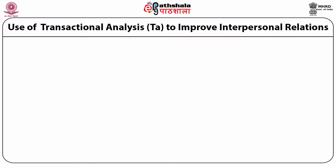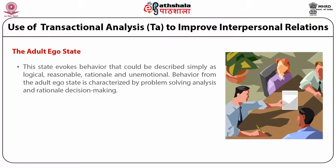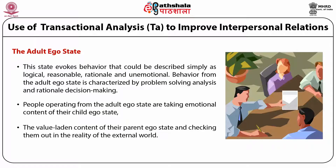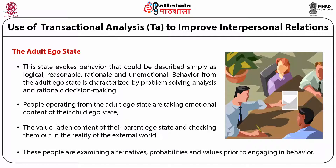The adult ego state evokes behavior that could be described as logical, reasonable, rational, and unemotional. Behavior from the adult ego state is characterized by problem-solving analysis and rational decision-making. People operating from the adult ego state are taking the emotional content of their child ego state and the value-laden content of their parent ego state and checking them out against the reality of the external world. These people are examining alternatives, probabilities, and values prior to engaging in behavior.